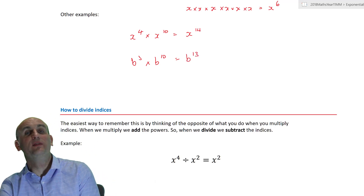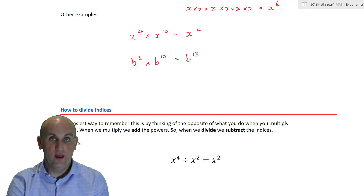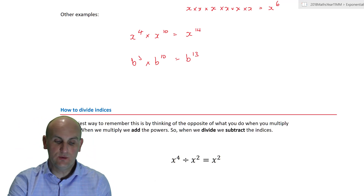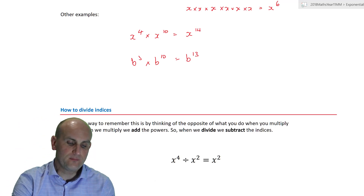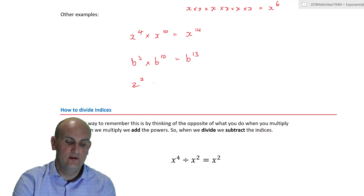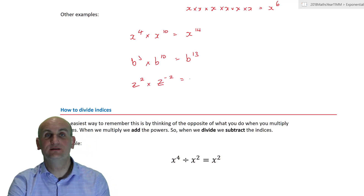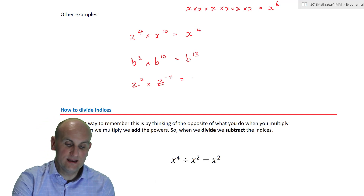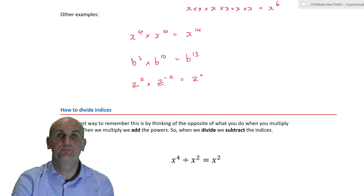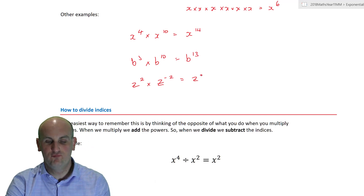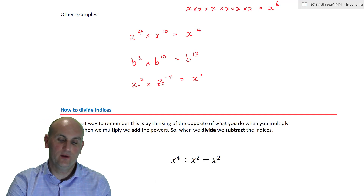In fact, if I had z to the power of two times z to the power of minus two, when we add those powers together we get z to the power of zero. And zero is a really important term.